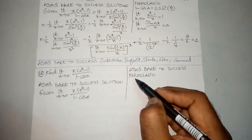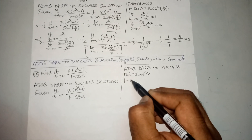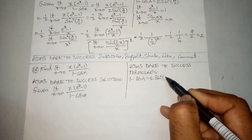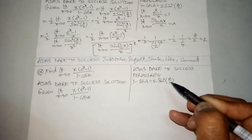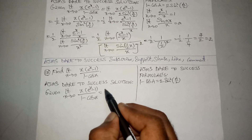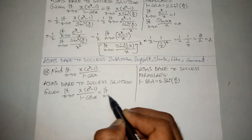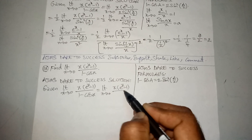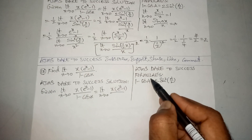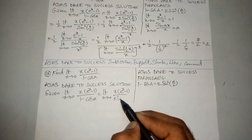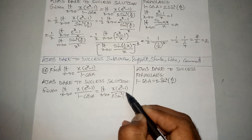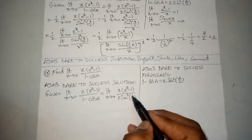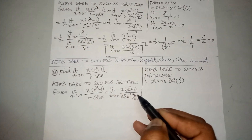One more formula from trigonometry: 1 minus cos a is equal to 2 sine squared a by 2. So in the expression limit x tends to 0 of x times a to the power x minus 1 divided by 1 minus cos x, substituting: 1 minus cos x becomes 2 sine squared x by 2.